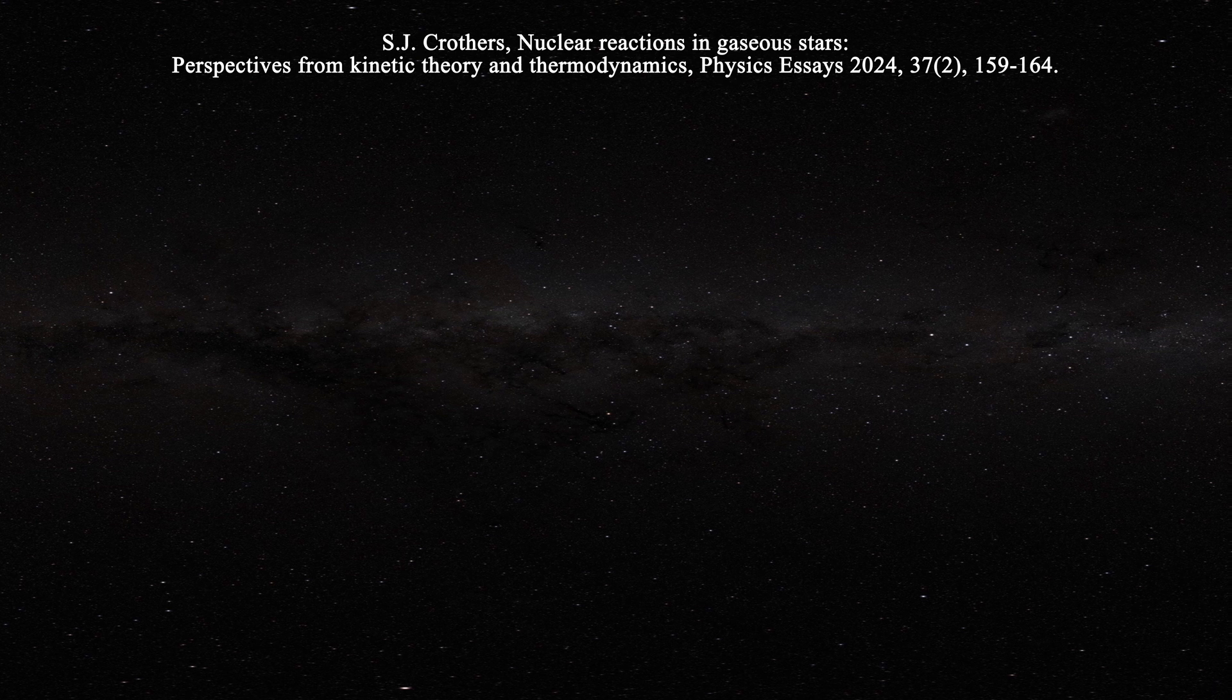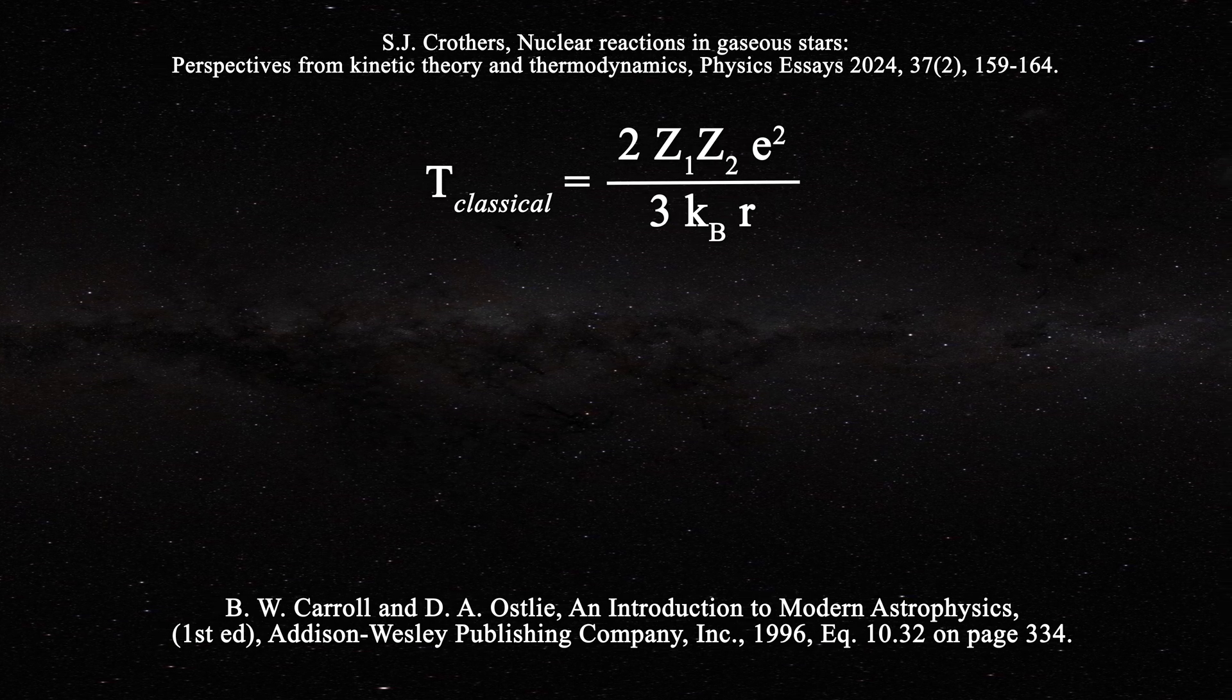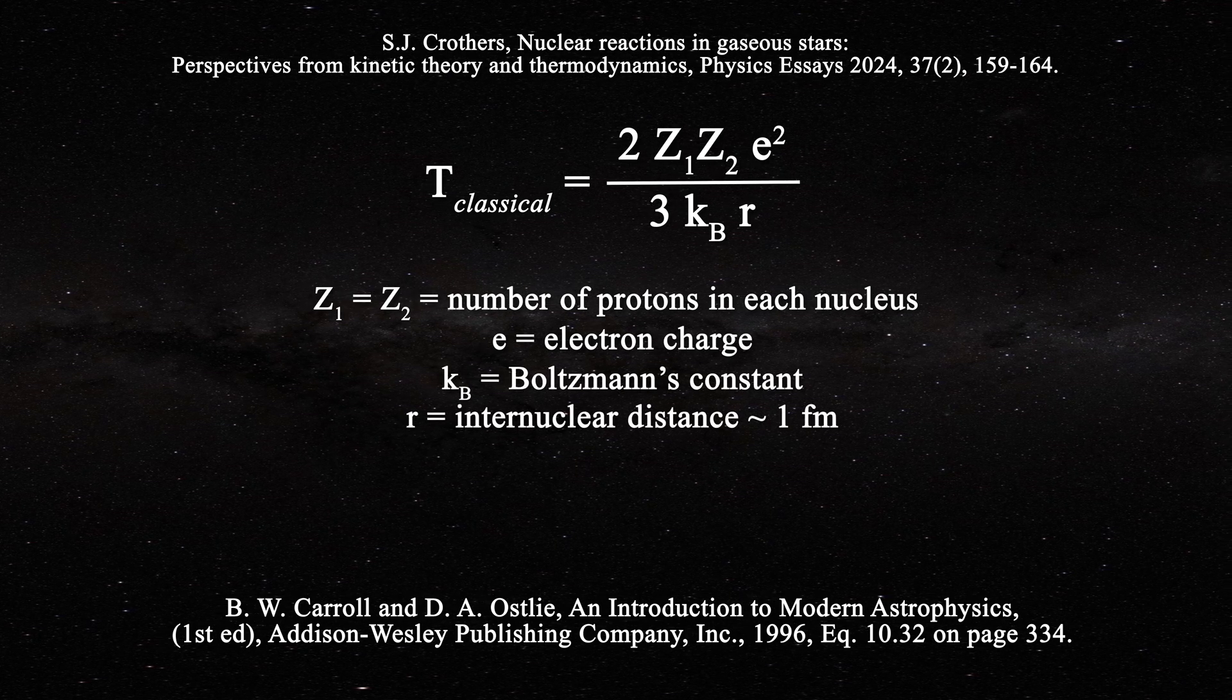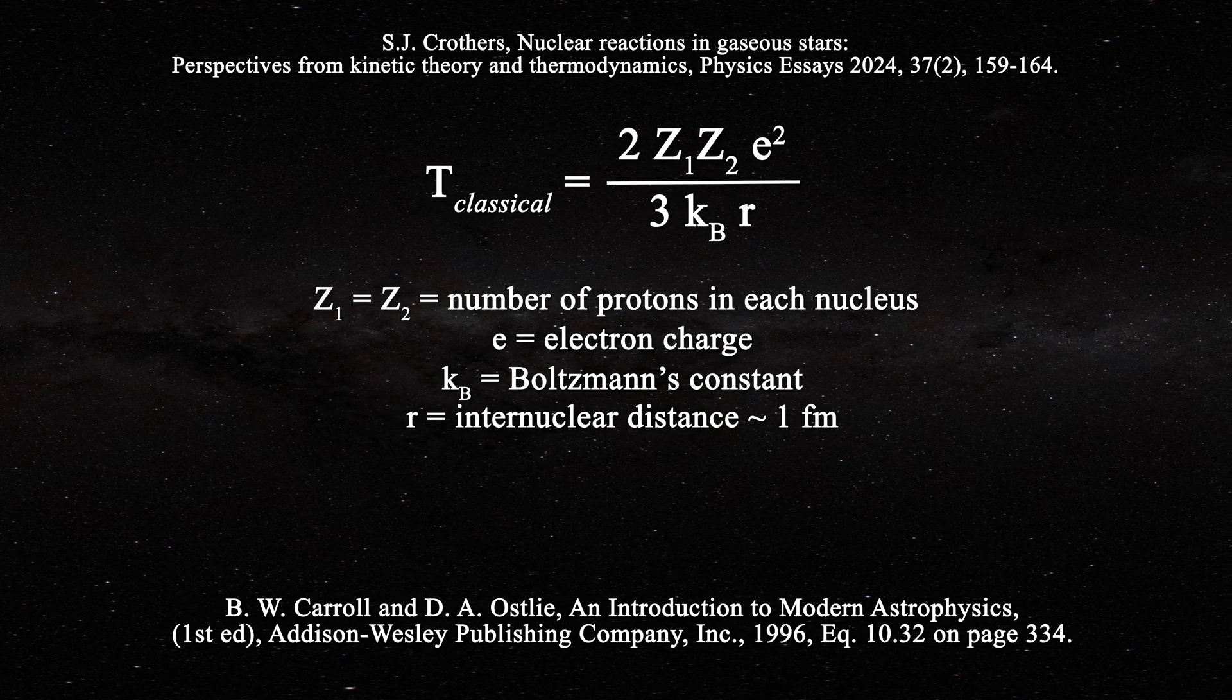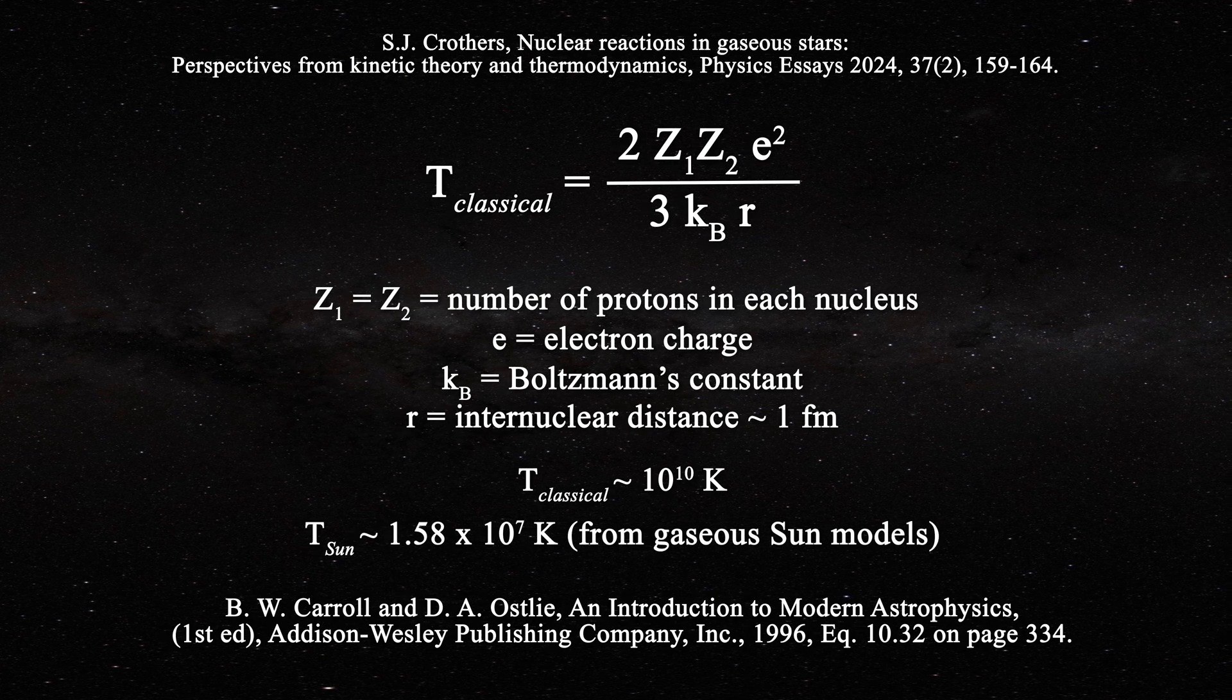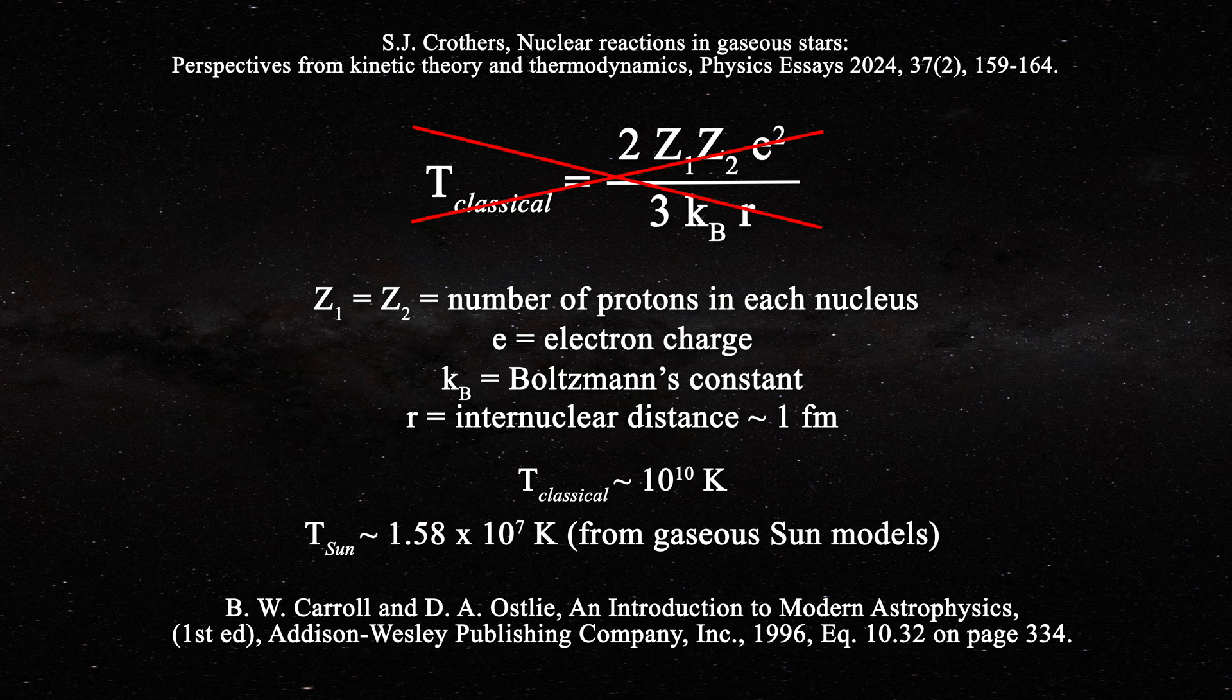According to astrophysicists, the temperature of the gaseous plasma required to overcome the Coulomb barrier is given by this expression. This temperature is derived from the supposed Coulomb potential energy between the particles of an ideal gas, where Z1 and Z2 are equal to the number of protons in each nucleus, E is the electron charge, K is Boltzmann's constant, and R is the internuclear distance. Yet this expression is incorrect because the temperature on the left side is intensive, while the right side is not intensive.